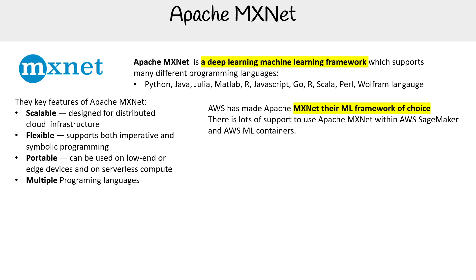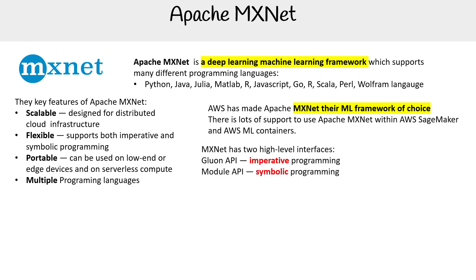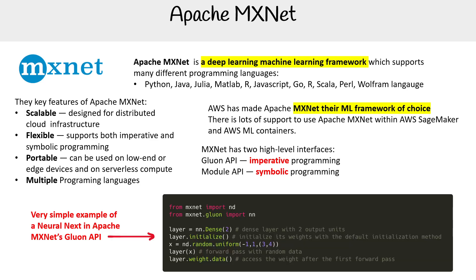MXNet has two high-level interfaces. One is called Gluon, and the other is the Module API. Depending on which one you use, one is imperative programming and one is symbolic programming. This is more of a deeper concept for machine learning, but one is really easy and one is really hard. Let's look at a very simple example of some code using the Gluon API.